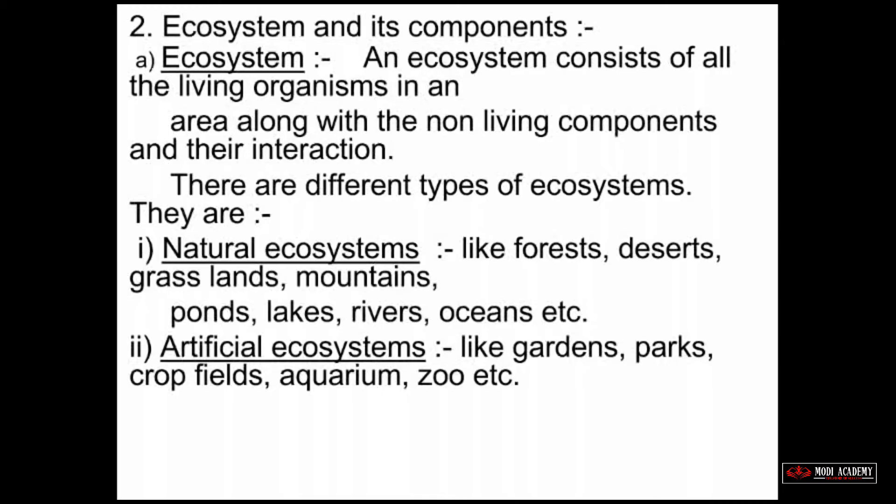Natural ecosystems include forests, deserts, grasslands, mountains, ponds, lakes, rivers, and oceans. Artificial ecosystems include gardens, parks, crop fields, aquariums, and zoos.